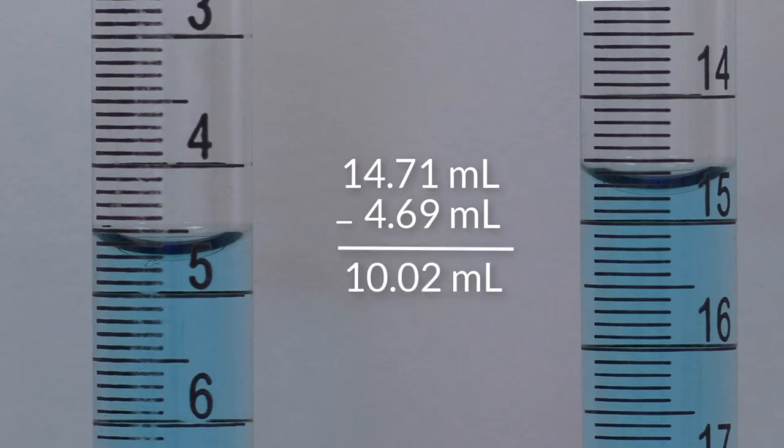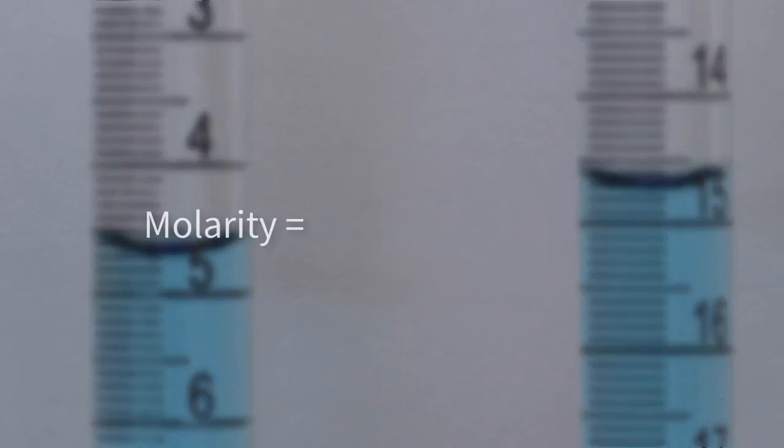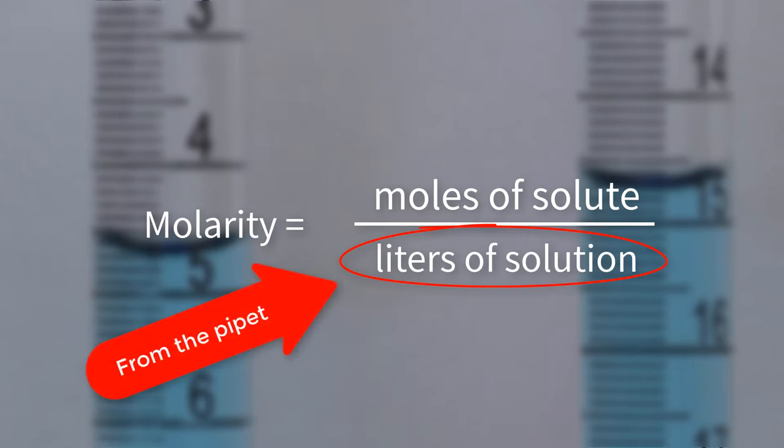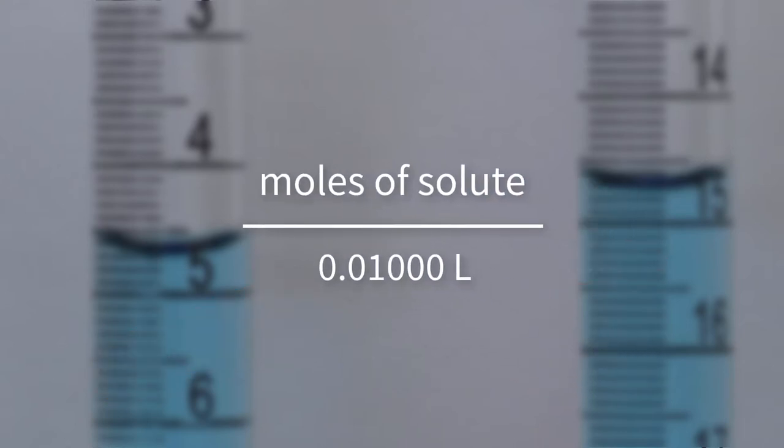Now we have enough information to calculate the molarity of the acid solution. Molarity is a unit of concentration and is defined as moles of solute per liter of solution. Since we are interested in the molarity of the acid solution, we need to know the number of moles of acid and a quantity of acid solution. Lloyd has already measured the volume of the acid with a 10 milliliter pipette, so we have that piece of the puzzle. We now need to convert to liters. There are 1,000 milliliters in one liter, so we can apply this conversion factor to get 0.010000 liters.